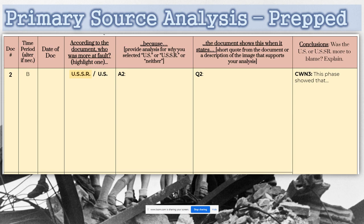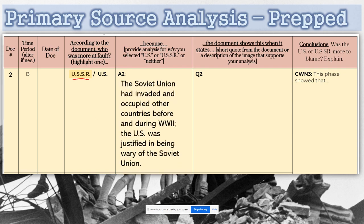Go ahead and do the same with document two — read it, determine whose side is more at fault. I'll provide a sample for both. Here's an example pointing fingers at the USSR using document two: 'The Soviet Union had invaded and occupied other countries before and during World War II. The U.S. was justified, therefore, in being wary of the Soviet Union.' They've seen it in the past, so even as allies, they had reason for suspicion.